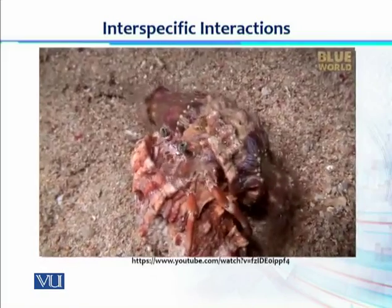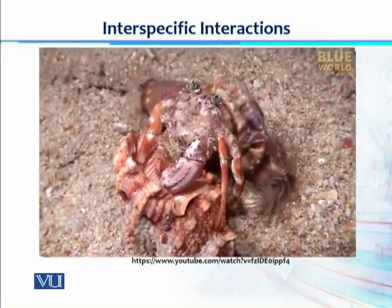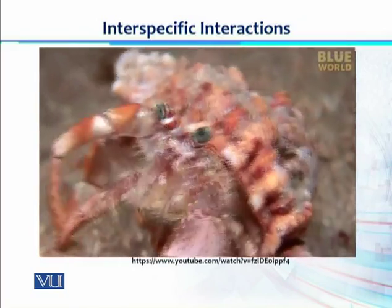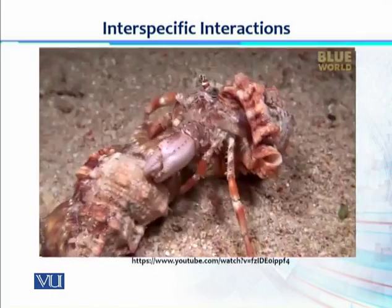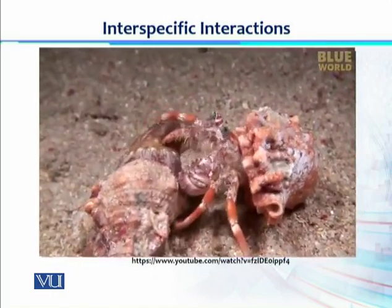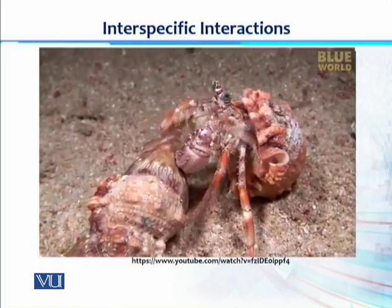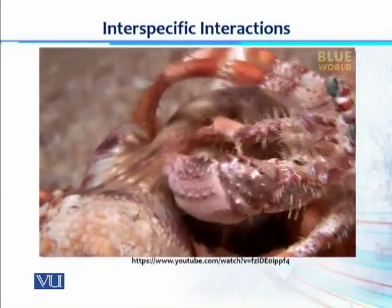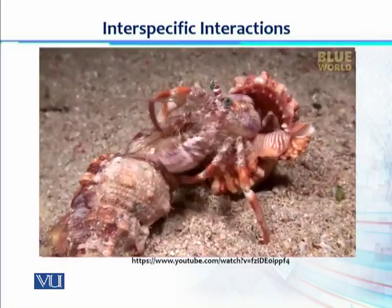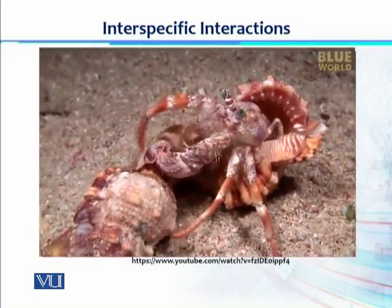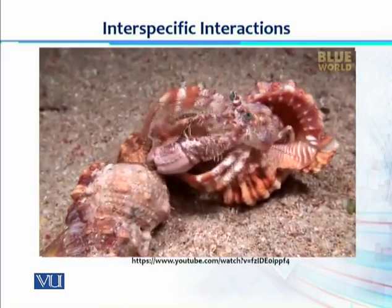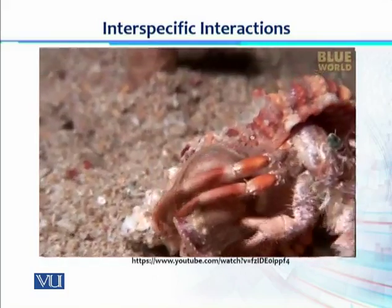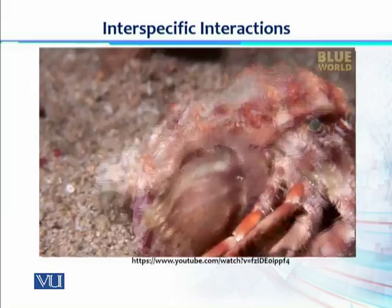Since the hermit crab uses an old snail shell for a home, she needs to find a larger shell every once in a while as she grows. The anemones are so important to the hermit crab that she must also move them to the new shell — without them, she's defenseless. With a combination of tapping and peeling their edges, the hermit crab convinces the anemones to release their grip and deposits them onto her new shell, where they crawl around and find a good spot on their own.